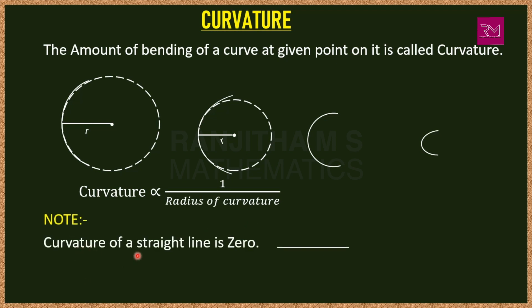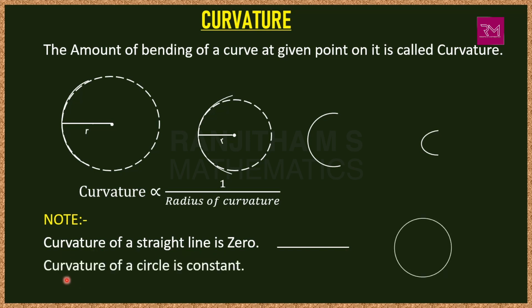The curvature of a straight line is zero. In a straight line there is no bend at any point, so the curvature value is zero at every point. Similarly, the curvature of a circle is constant — at any point on the circle the curvature value is the same. This is the geometrical interpretation of curvature and radius of curvature.